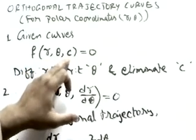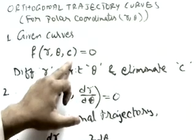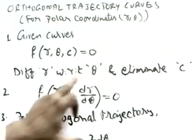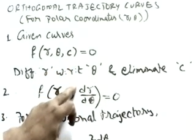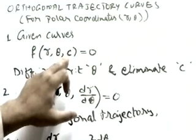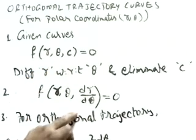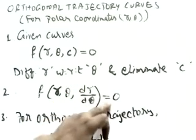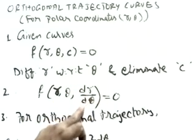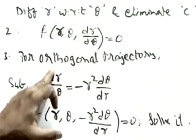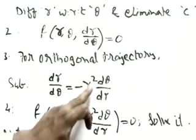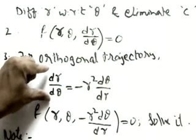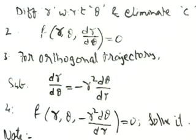Suppose the given equation is f(r, θ, c), where c is the parameter. First, we have to differentiate r with respect to theta and eliminate c. After removing c, suppose we get the equation f(r, θ, dr/dθ) = 0. For orthogonal trajectory, we substitute dr/dθ equals minus r squared dθ/dr. This is the method for orthogonal trajectory.